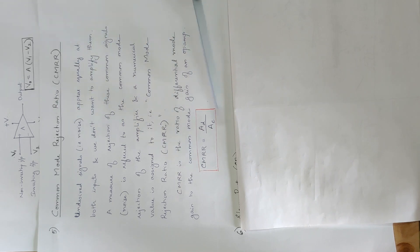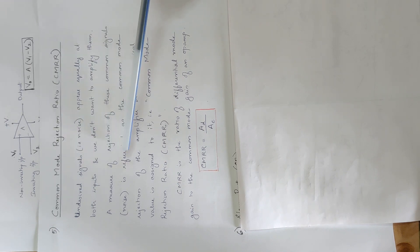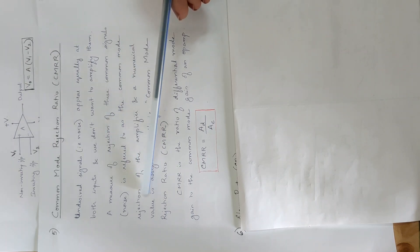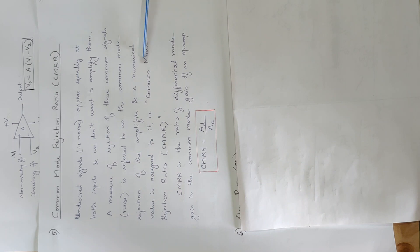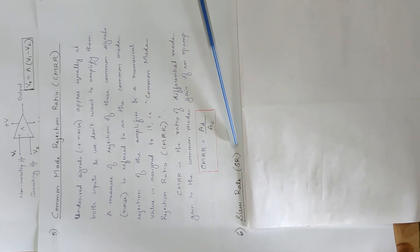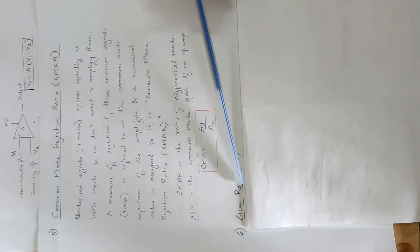Basically, common mode noises are rejected. That is the measure of common mode rejection. It is the ratio — a numerical value assigned to it — that is CMRR. That is the definition.